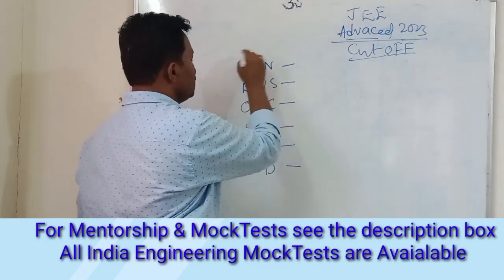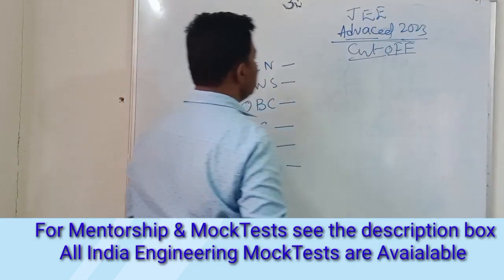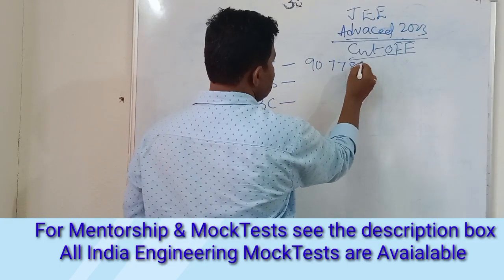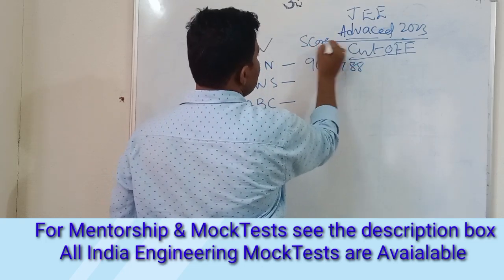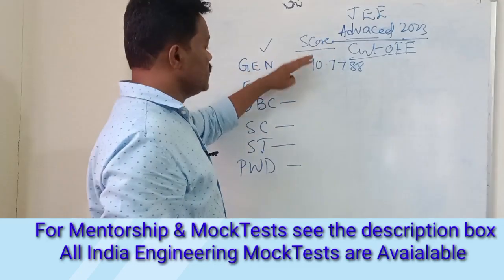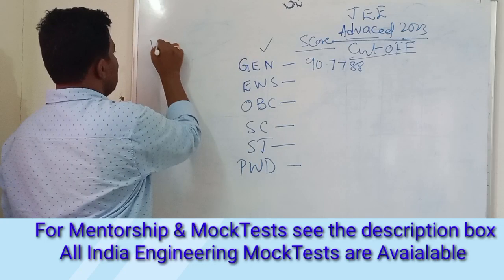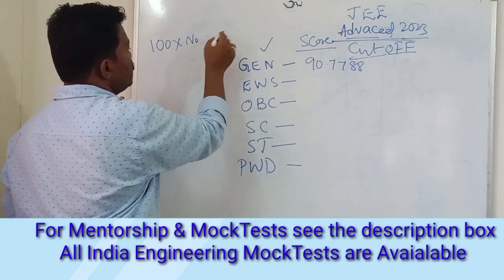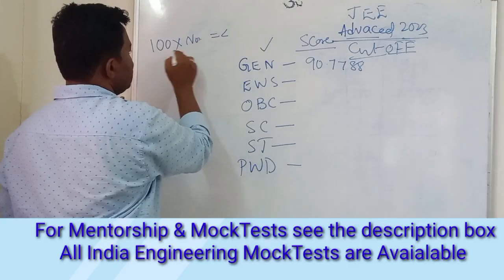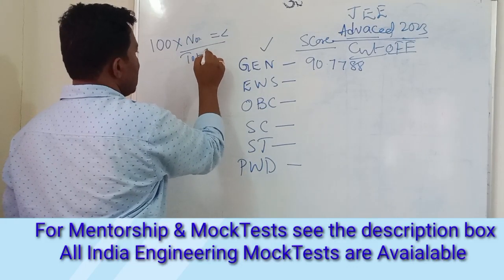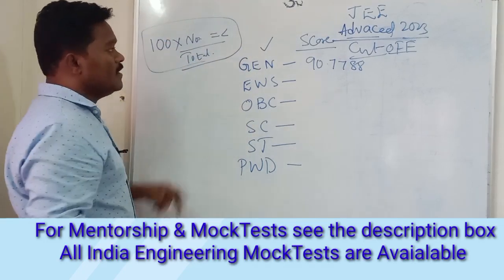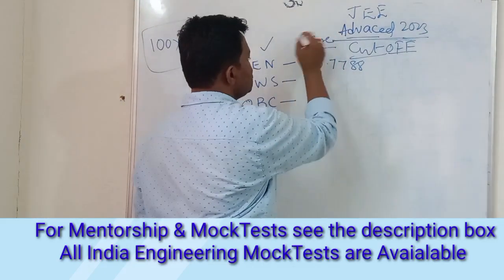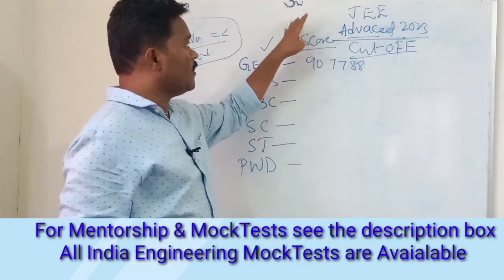For JEE Advanced 2023, if you see the General category cutoff, it is basically 90.778. This is the NTA score — it is not the marks. The NTA score is calculated as: 100 multiplied by the number of candidates who appeared and whose score is equal to or less than the candidate's score, divided by the total number of candidates appeared in the exam.